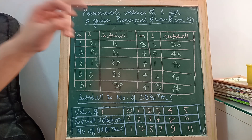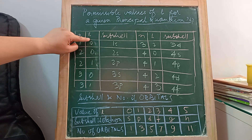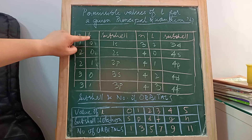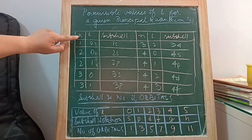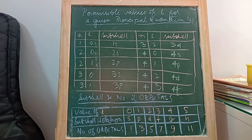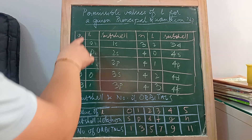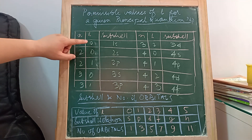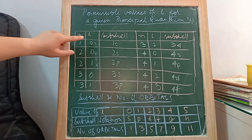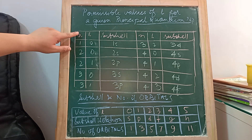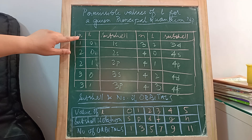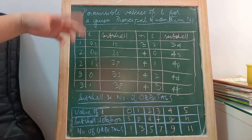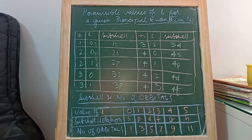The principal quantum number N and azimuthal quantum number L are denoted by small n and small l. For a principal quantum number N having value 1, the permissible value of the azimuthal quantum number L will be 0. So for N equal to 1, the permissible azimuthal quantum number is only 0 — having just one value.